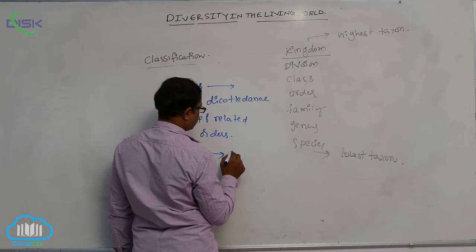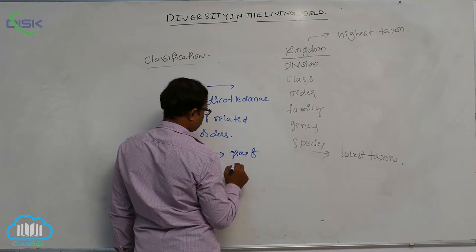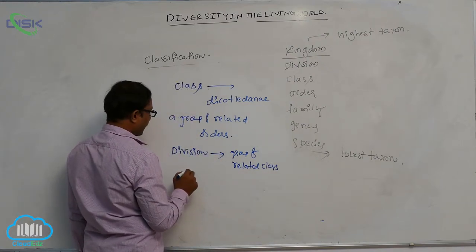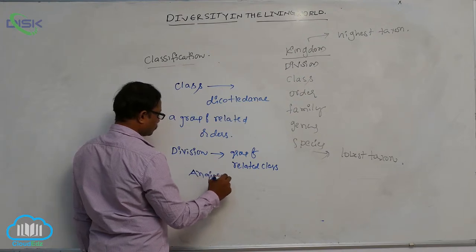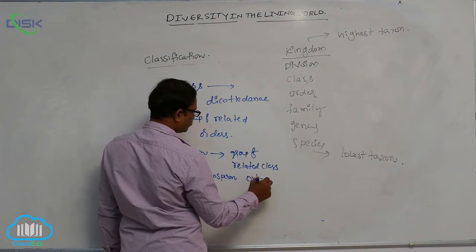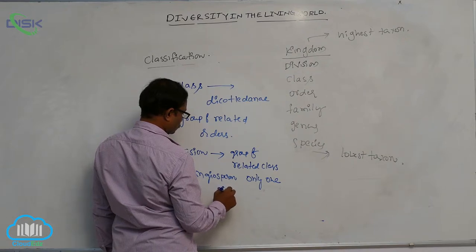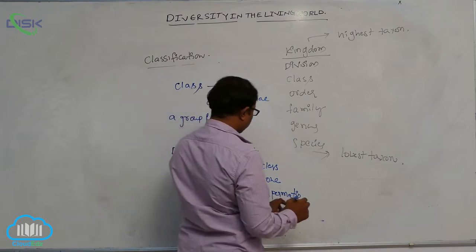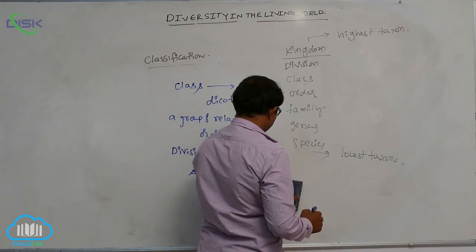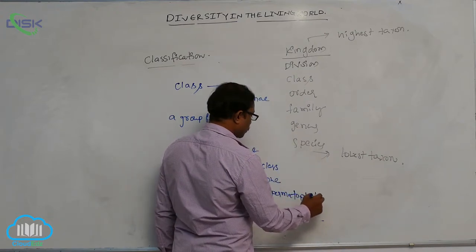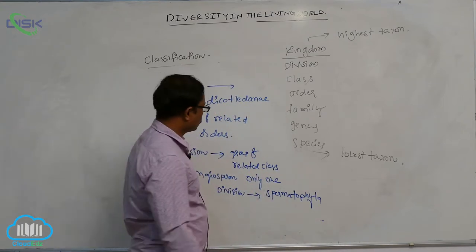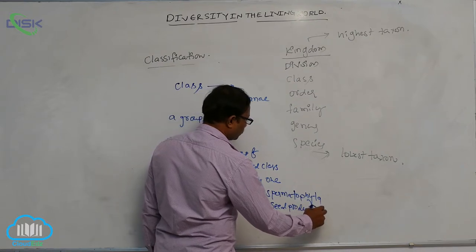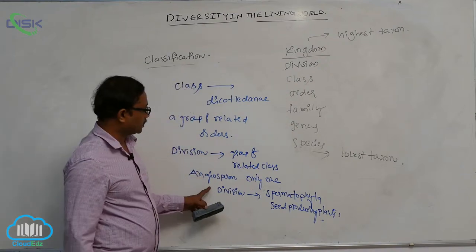A group of related classes is the division. For example, angiosperms have only one division, known as Spermatophyta. Sperma means seeds and phyta means plants, so they are known as seed-producing plants.